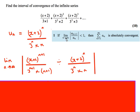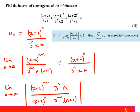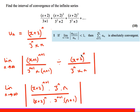I'm going to do the same as before and look at the (n+1)-th term over the n-th term. Replacing n with n+1: the numerator becomes (x+2)^(n+1) and the denominator becomes 3^(n+1) times (n+1). I divide that by the n-th term and take the limit as n approaches infinity. I flip and multiply to simplify the fraction.